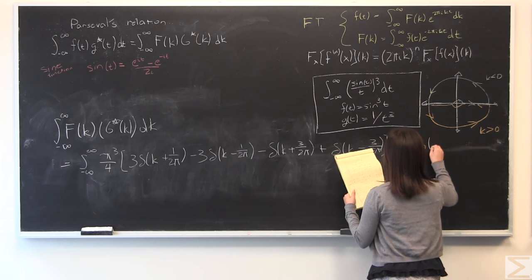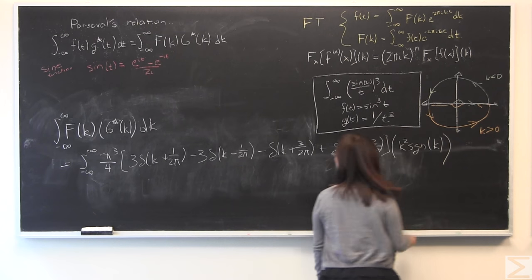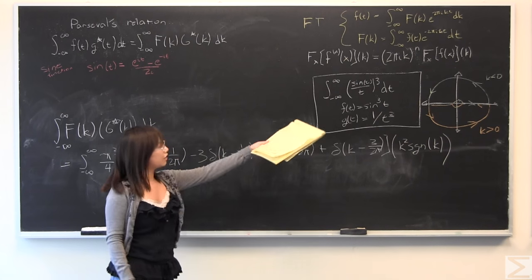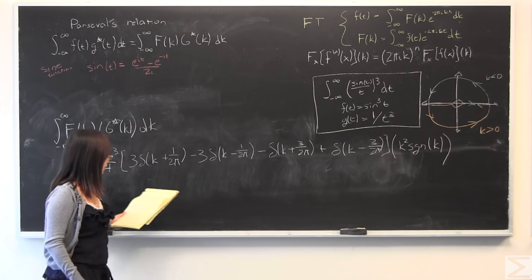And then we have the remainder from the complex conjugate of the Fourier transform of 1 over t cubed. Again, I combined the terms earlier. And this is what you have to evaluate to find the equivalent of that.